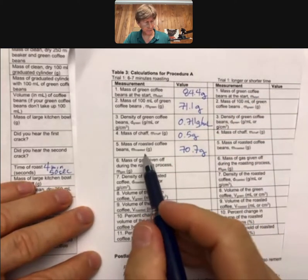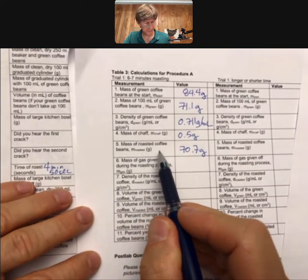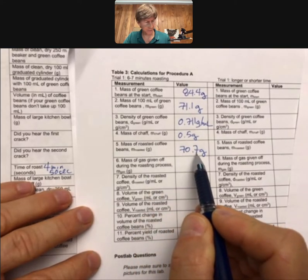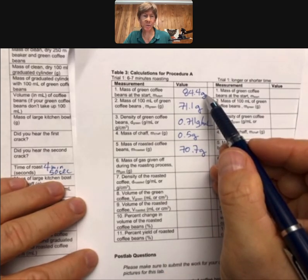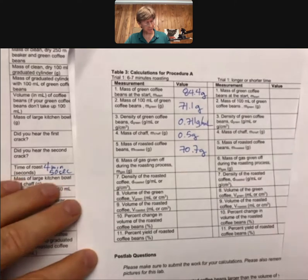And for comparison purposes, you can see that my mass of roasted coffee beans is 70.7, and my green coffee beans are 84.4. So that's a significant change in mass.